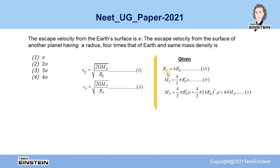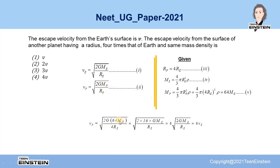Now if we substitute MP and RP into equation 2, we will get the escape velocity from the surface of the planet. Simplifying this expression, we can see it reduces to the expression for the escape velocity from the Earth's surface as in equation 1. Finally, we get the escape velocity from the surface of the planet as 4 times the escape velocity from the surface of the Earth. So the 4th option will be the correct option.